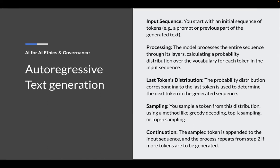You have an input sequence that starts with an initial set of tokens — this is a prompt or some previous part of the generated text. The model will process the entire sequence through its layers and calculate a probability distribution over the vocabulary for each token in the input sequence. This is actually one of the reasons why these are pretty inefficient — it's not just predicting the next token, it's actually predicting the next token for all the tokens you put in.